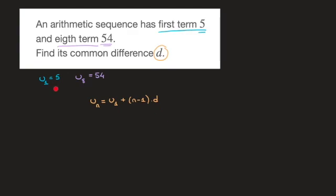Now, since we know that the first term of the sequence equals 5, we can replace this u sub 1 by 5, and state that the formula for the nth term is equal to 5 plus n minus 1 times d. And that's that first bit of information used. So I put a little tick mark next to it to say that I've already used that.